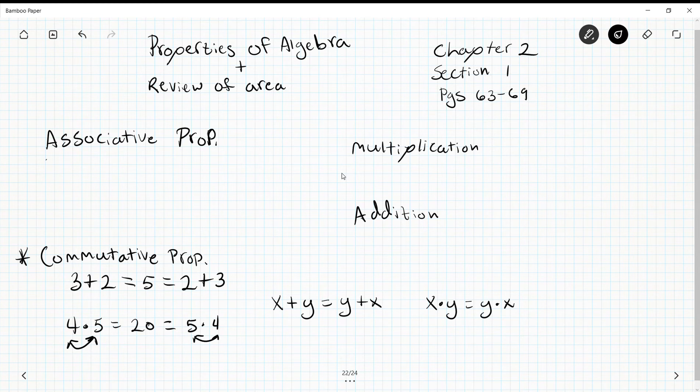For addition: 2 plus 4 in parentheses plus 6. If I'm following order of operations, I have to add what is inside parentheses first, so the 2 and the 4. That's 6 plus 6 is 12. If I change up where the parentheses are and shift them one down, 2 plus parentheses 4 plus 6, 4 plus 6 is 10, plus 2 is 12.